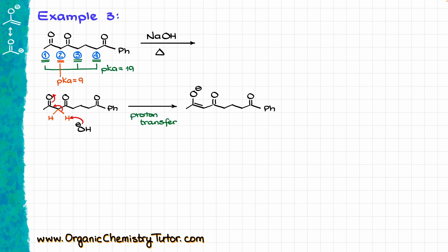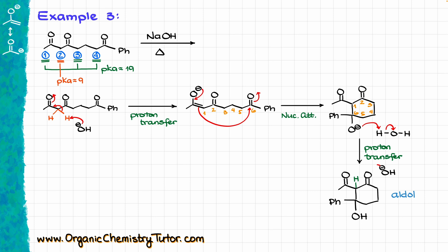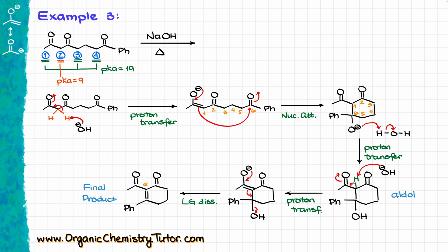I'll redraw the molecule, show those two protons at position two, bring in the base, and deprotonate that position to make the corresponding enolate. From this point there is only one possibility for the nucleophilic attack — onto the carbonyl next to the aromatic ring — which gives a 6-membered ring. I draw the intermediate, protonate to make the aldol, which immediately loses a proton to the base reforming an enolate, and finally that enolate kicks the leaving group out, giving the final alpha-beta unsaturated cyclic product.